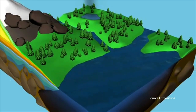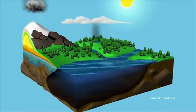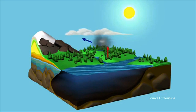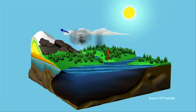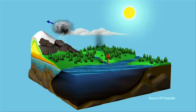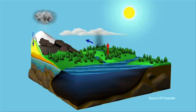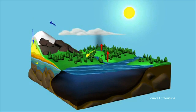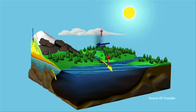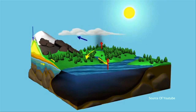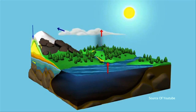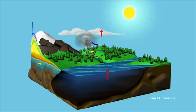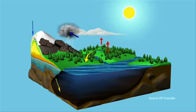Air yang tidak meresap akan mengalir di permukaan tanah menuju ke sungai, disebut sebagai surface runoff. Air yang berada di sungai sebagian akan menguap, dan sebagian besar akan menuju ke laut yang akhirnya menguap juga. Uap air ini akan berkondensasi menjadi awan, begitu seterusnya siklus hidrologi terjadi.